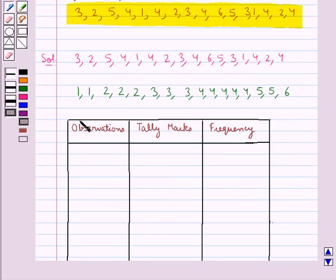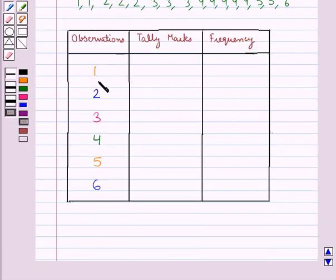In this table we have the observations, the tally marks and the frequency for the corresponding observations. These are the observations: 1, 2, 3, 4, 5 and 6.